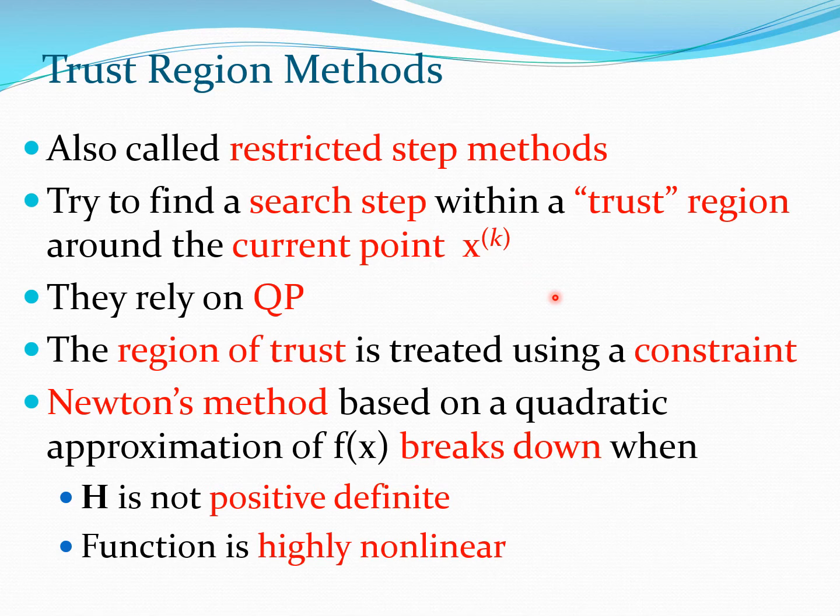Now one of the reasons for the development of Trust Region Methods is that if you are dealing with any kind of quadratic approximation, which is essentially a Newton type of method, this approximation tends to break down if H is not positive definite. And the second fact is the function is very non-linear. Now it can happen in many cases that the function is more non-linear than a quadratic can capture. And therefore you need to be in a small region around the point xk where the function essentially behaves as a quadratic for the Newton method or a quadratic programming type method to work out well.